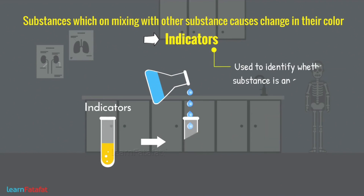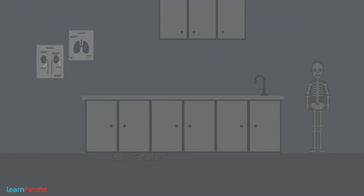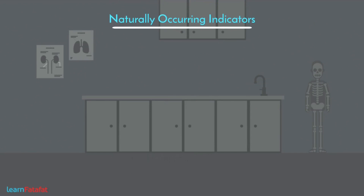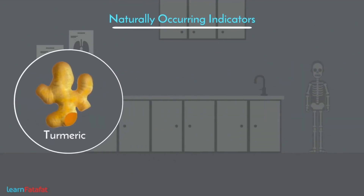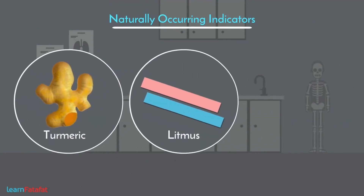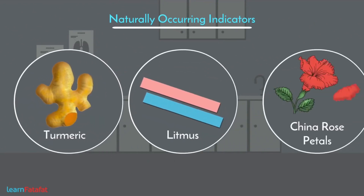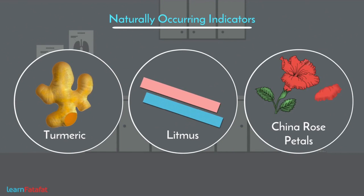Some of the naturally occurring indicators are turmeric, litmus, and petals of china rose, which is also called hibiscus, etc.